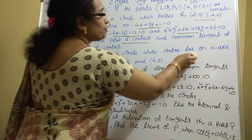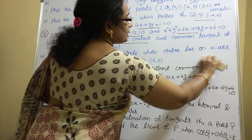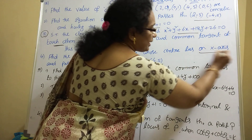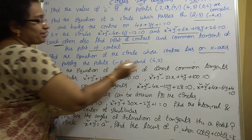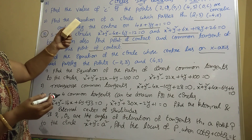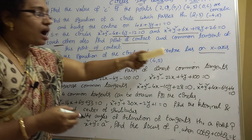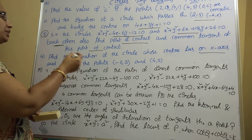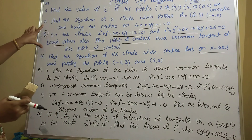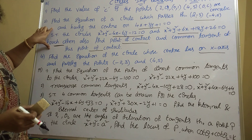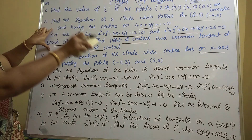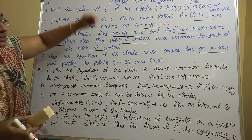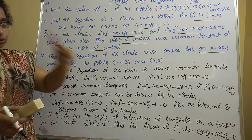Fourth question: Find the equation of the circle whose center lies on the x-axis and passes through the given points. This is similar to the second model. If the center lies on the x-axis, the y-coordinate of the center is zero. Use that condition to simplify. In these four sums, one question will compulsory come — for both AP and Telangana — and you'll get 7 marks.